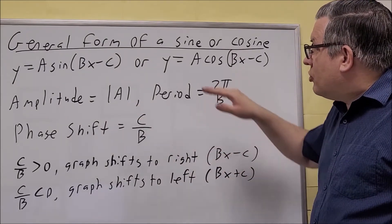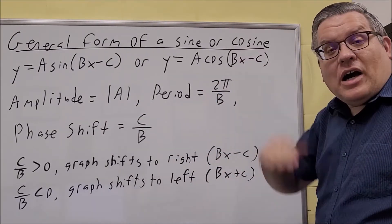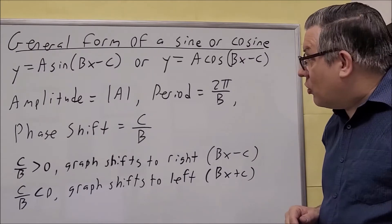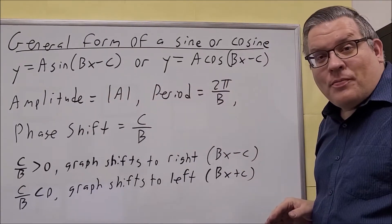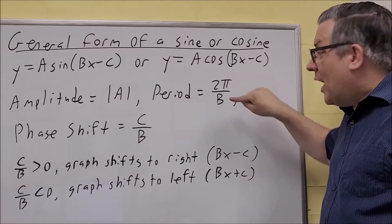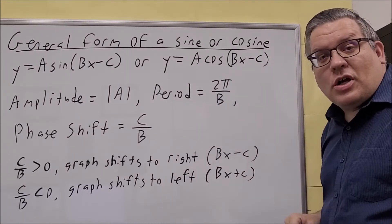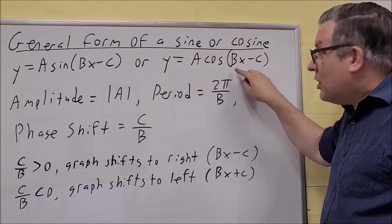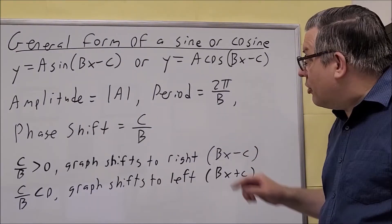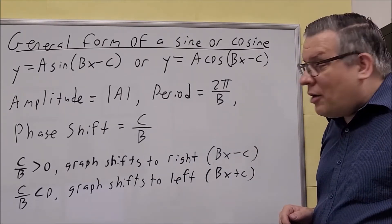We have our amplitude, so the amplitude is going to be how high or how low the graph goes, as we talked about earlier. You can get that directly from the equation itself. The period is 2π over B, and the reason why it's 2π is because the period of sine and cosine is 2π. And so whenever you have a B in front of the x, that's going to change your period. So that's the formula that you're going to use to determine that.